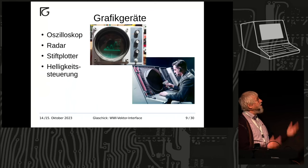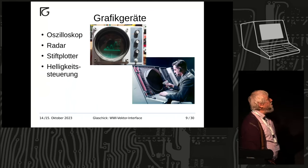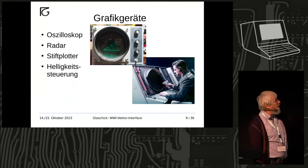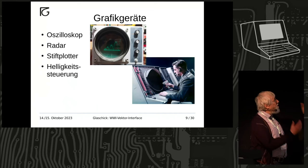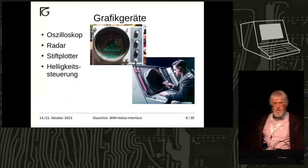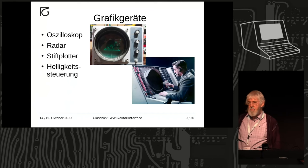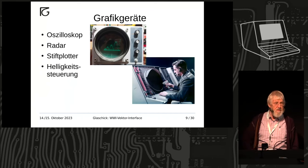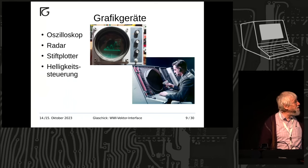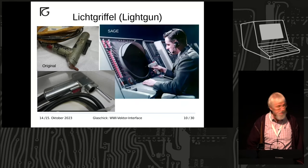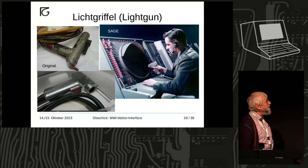Was hatte man für Grafikgeräte zu der Zeit? Das Oszilloskop, das Radar, vielleicht einen Stiftplotter — und alle hatten Helligkeitssteuerung. Beim Stiftplotter bedeutet das: Stift drauf oder drunter macht schwarz oder weiß. Das war die Ausgangsbasis, mit der man Grafik machen konnte und wollte. Und man hatte halt einen Lichtgriffel.